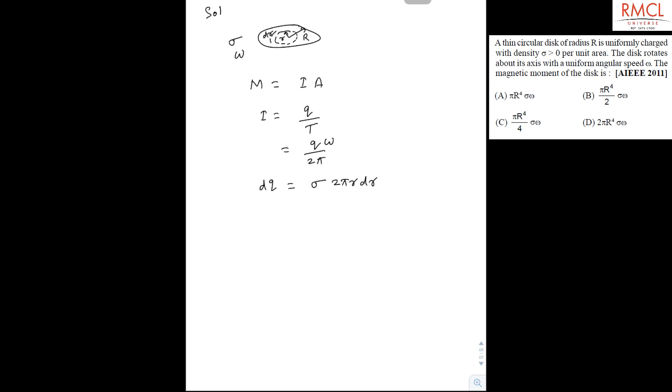So the magnetic moment will be sigma 2πr dr, this is the charge, upon 2π times omega. This is the value of I, and the area will be πr squared.